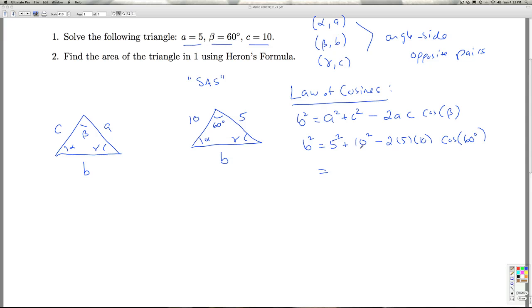So, B squared in this case equals A squared plus C squared minus two times A times C times the cosine of 60 degrees. So, I get 25 plus 100, that's 125 minus, remember the cosine of 60 degrees is one half. So, I've got minus 50, and this gives me 75.